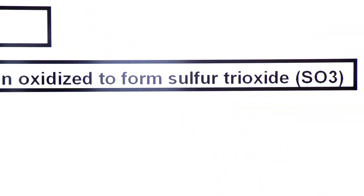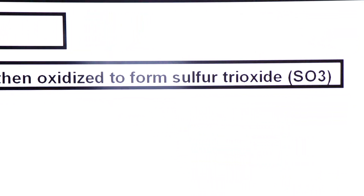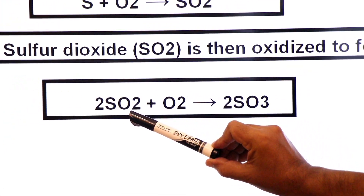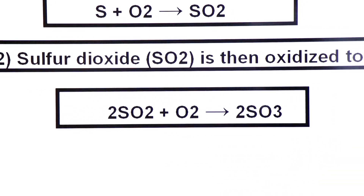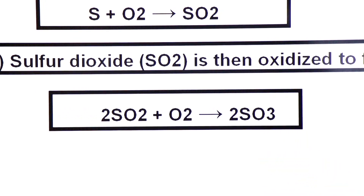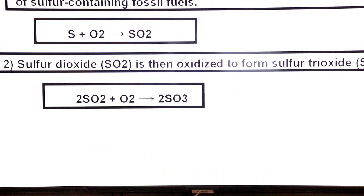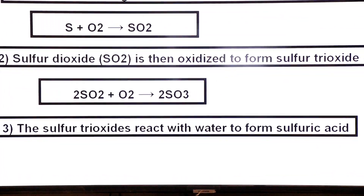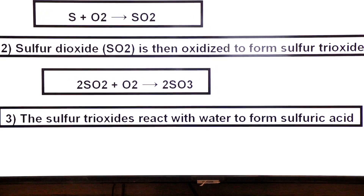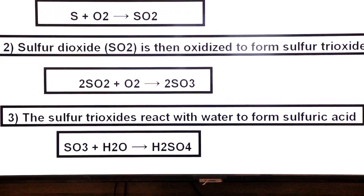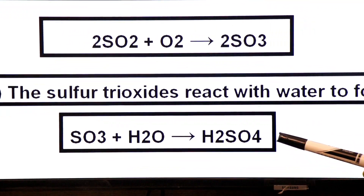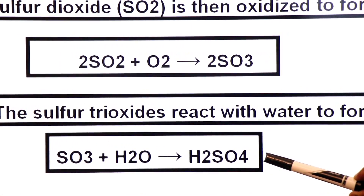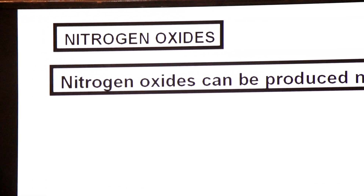Sulfur dioxide is then oxidized to form sulfur trioxide SO3. Two molecules of sulfur dioxide combine with molecular oxygen to form two molecules of sulfur trioxide. Now this sulfur trioxide combines with the tiny water droplets of clouds — sulfur trioxide reacts with water to form sulfuric acid. When sulfur trioxide combines with the water of clouds it is converted into H2SO4, sulfuric acid. In this way, sulfuric acid is formed from the oxide of sulfur.